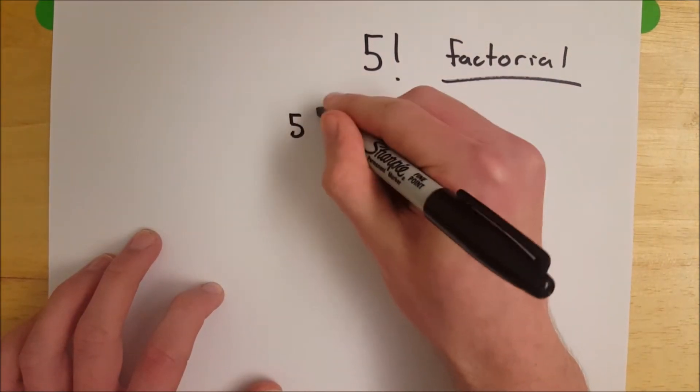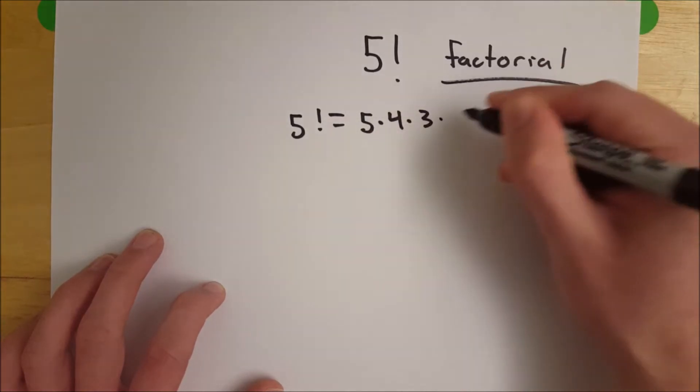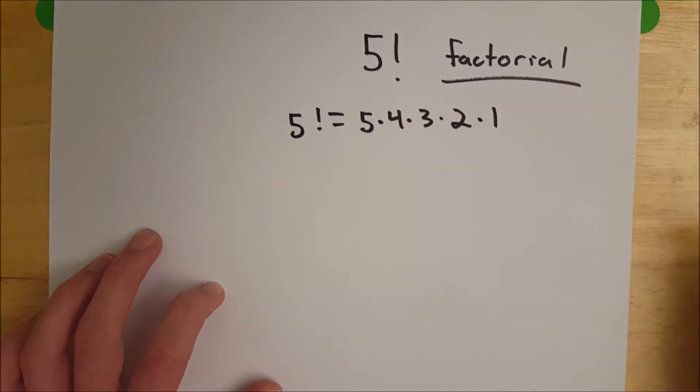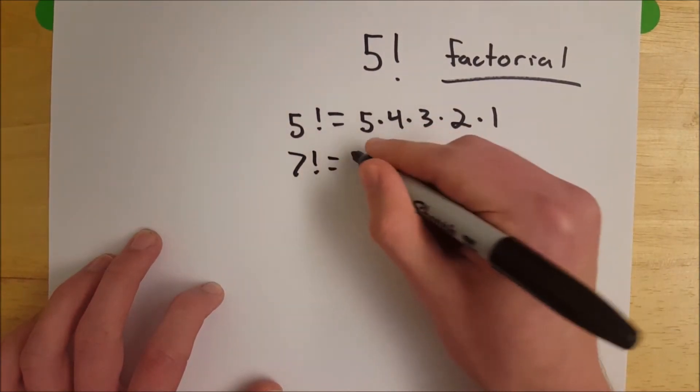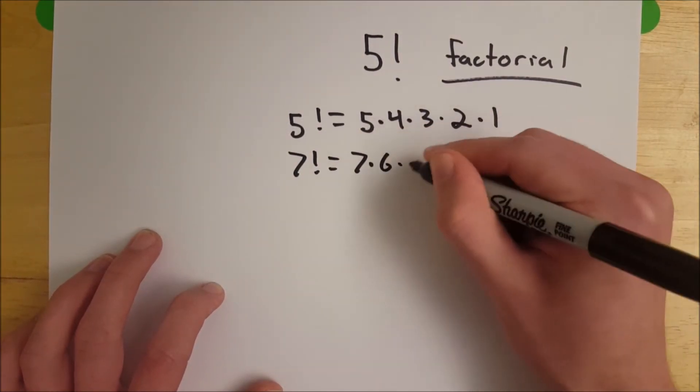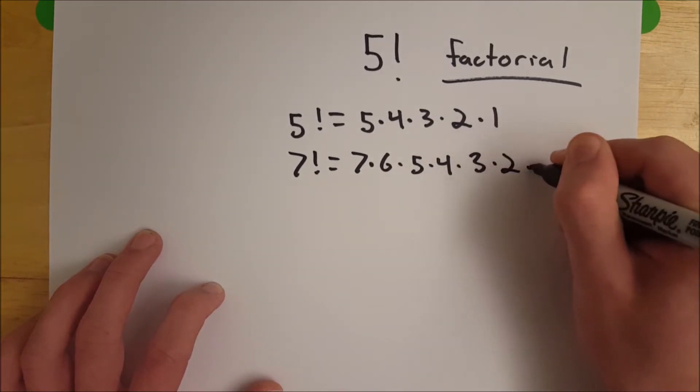Well, five factorial is equal to five times four times three times two times one. Similarly, seven factorial equals seven times six times five times four times three times two times one.